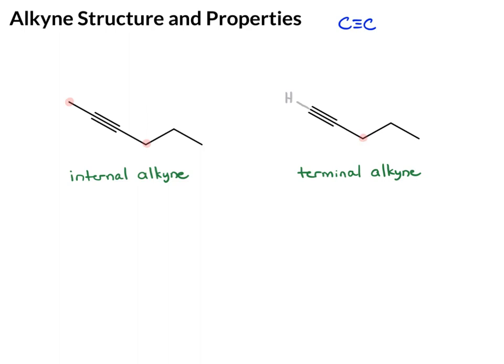The next thing you should notice is how, at the alkyne, everything is drawn in a linear fashion. So the carbon coming off of each carbon of the alkyne is drawn linearly.